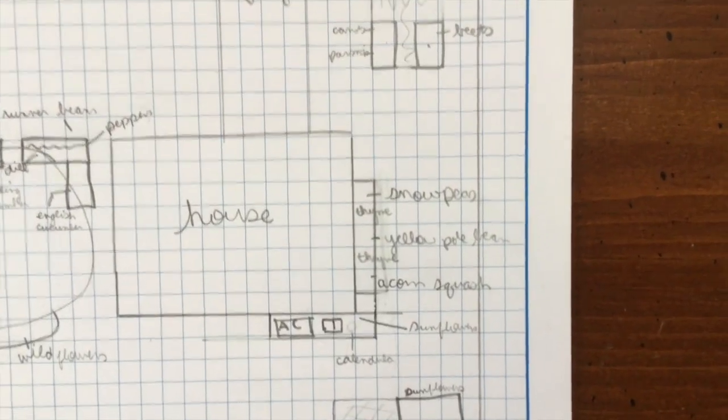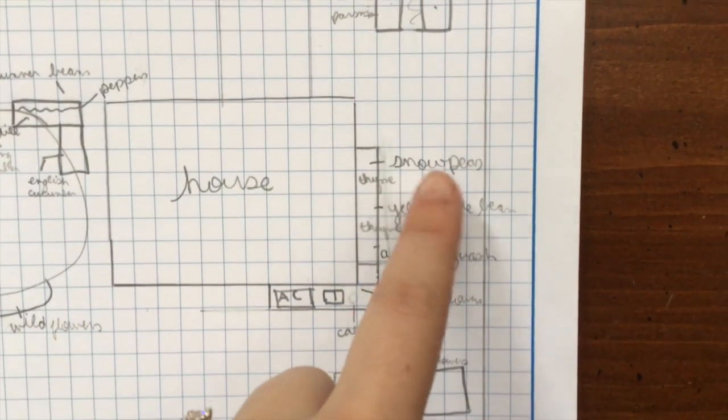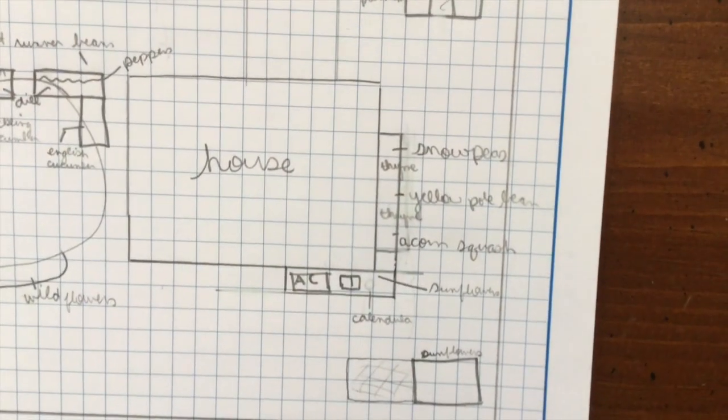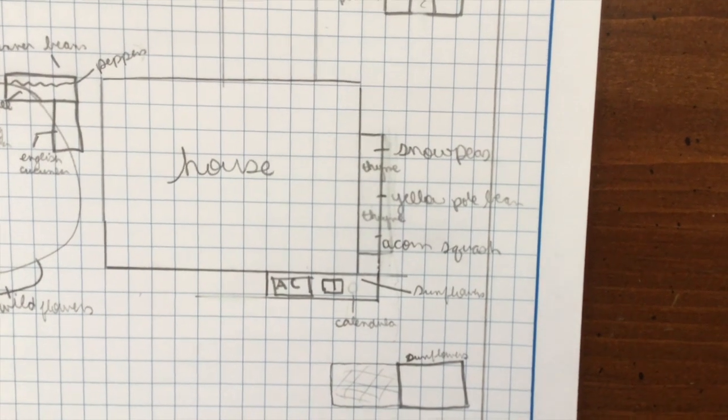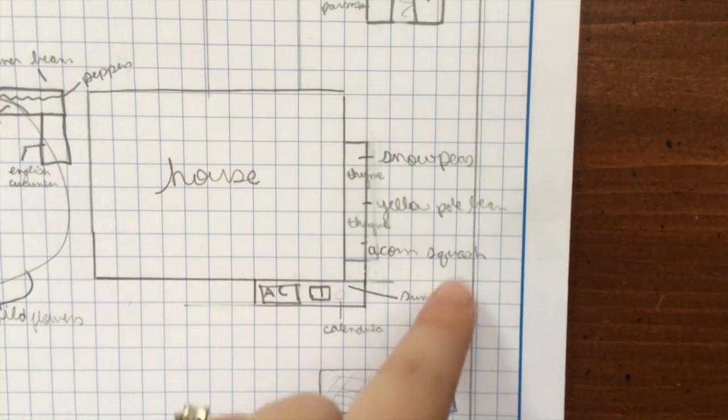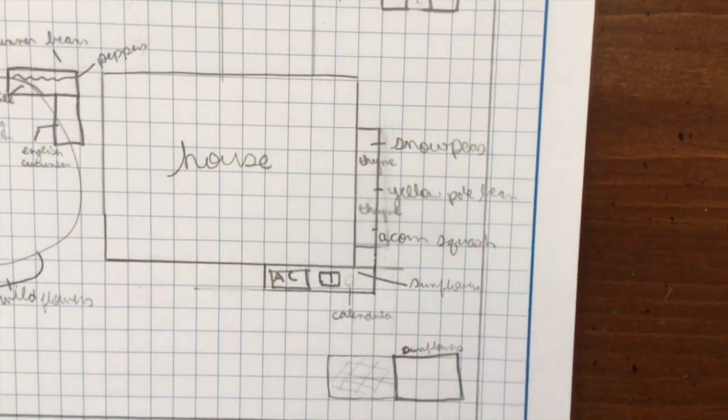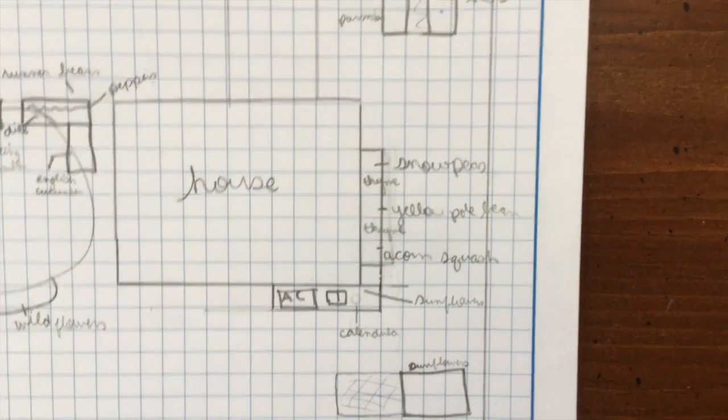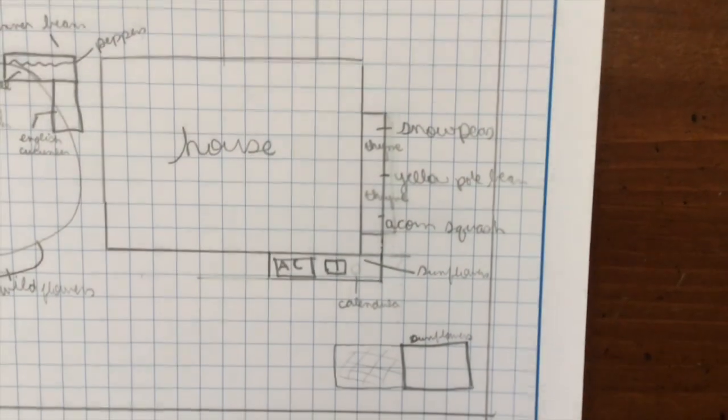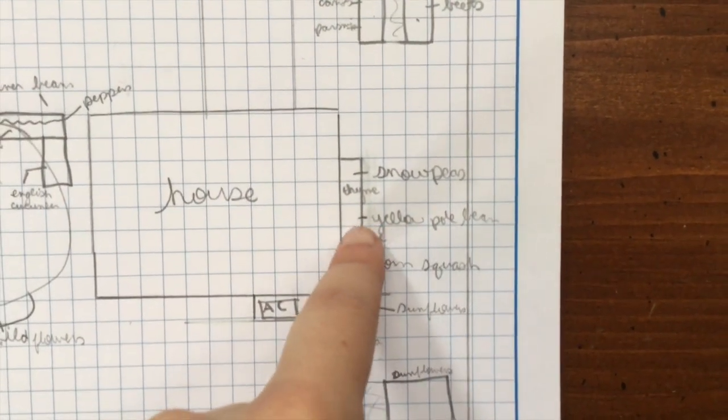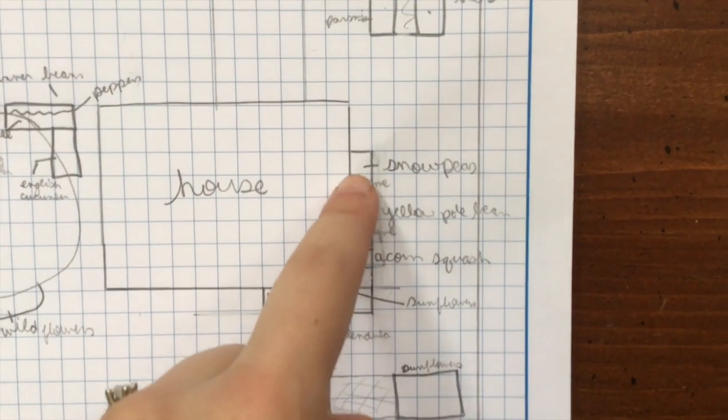As I said I did snow peas here last year and they did really well. David made me some A-shaped frames out of spare lumber so I leaned those up against the house here and the snow peas just climbed up them. This was the biggest snow pea yield I've ever had and I've been growing snow peas since 2013 so they did really well here and I plan to put them there again hoping they'll do just as well. I'm also going to throw in some yellow wax beans to the mix to see how those do.